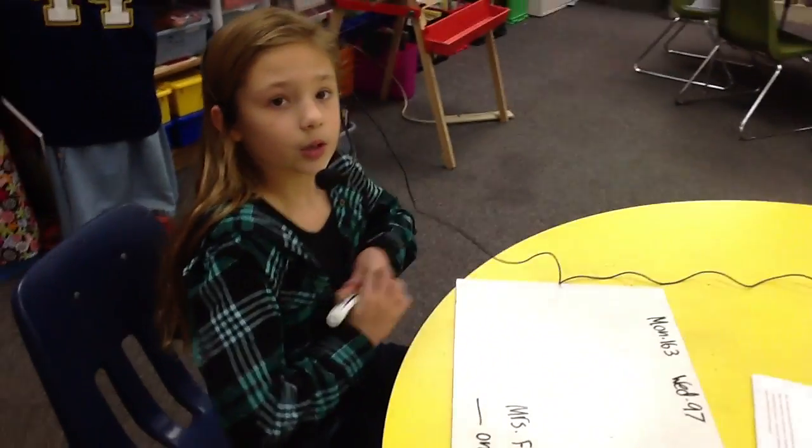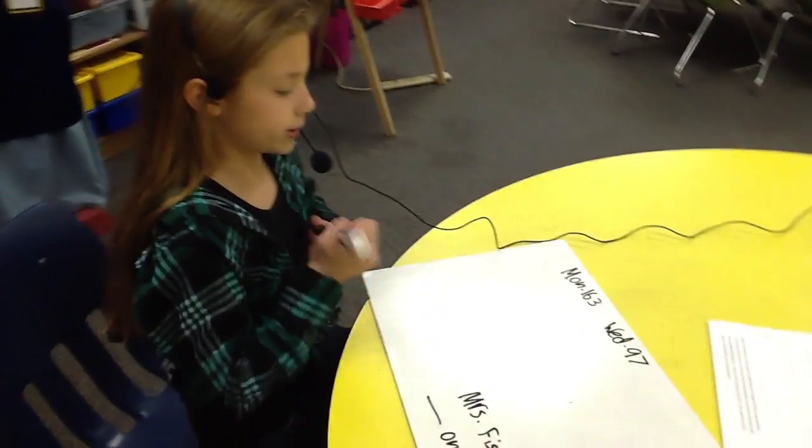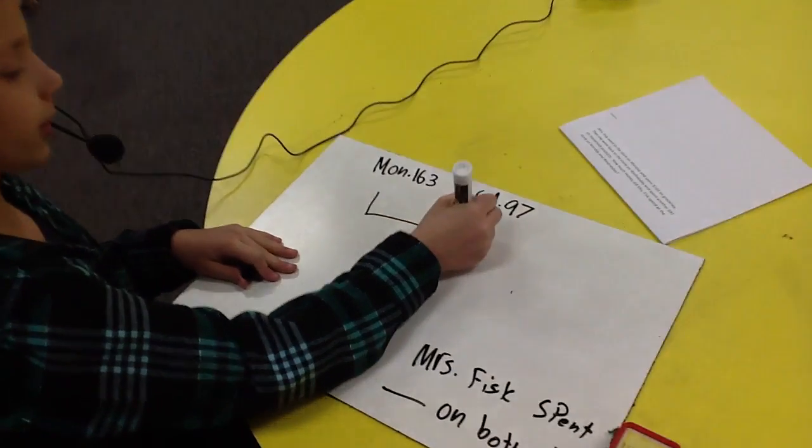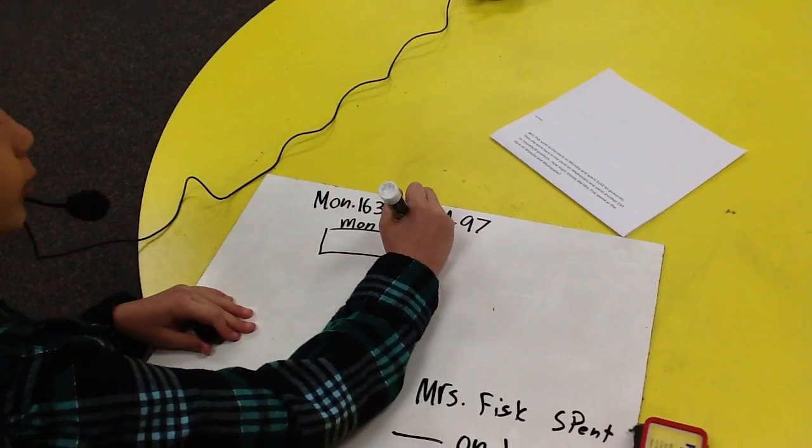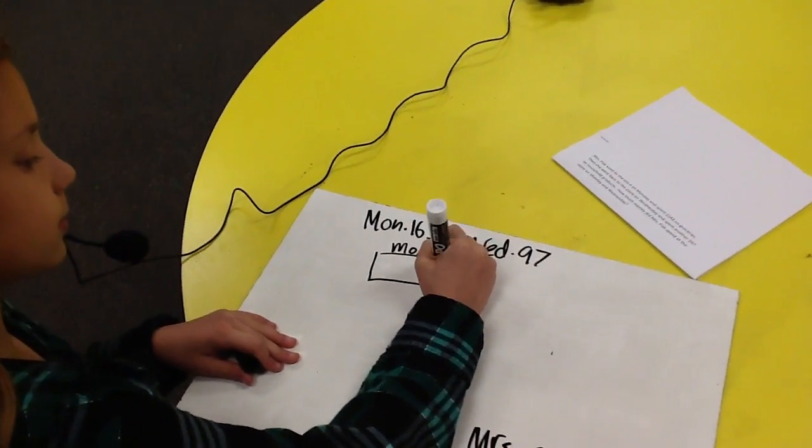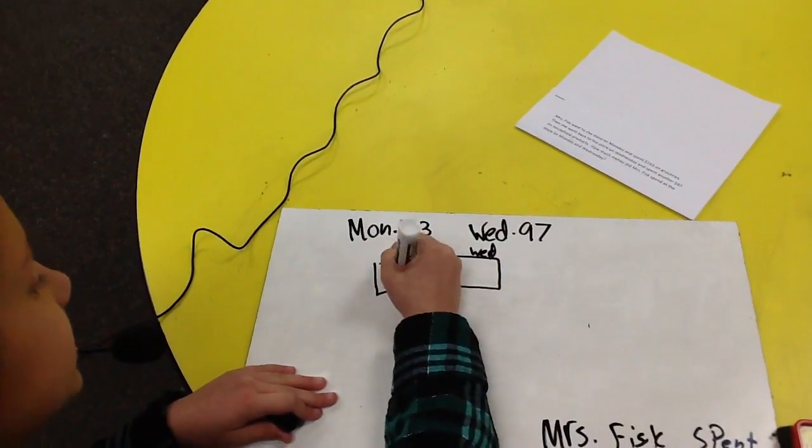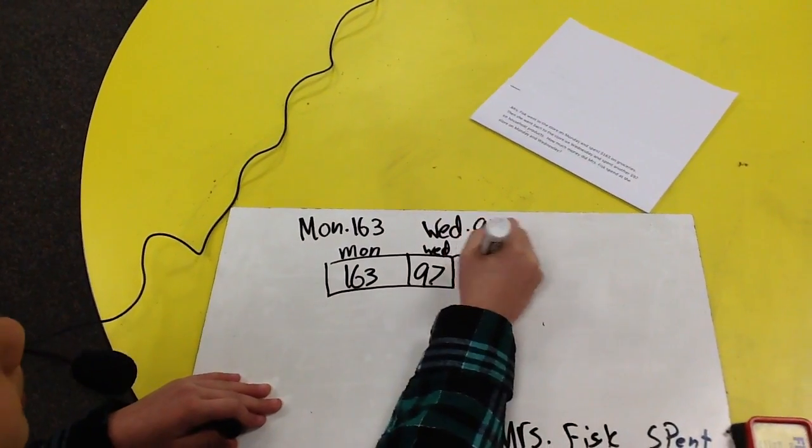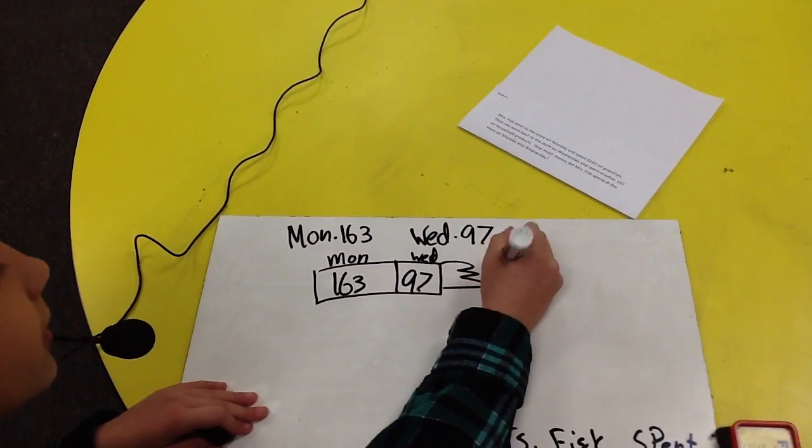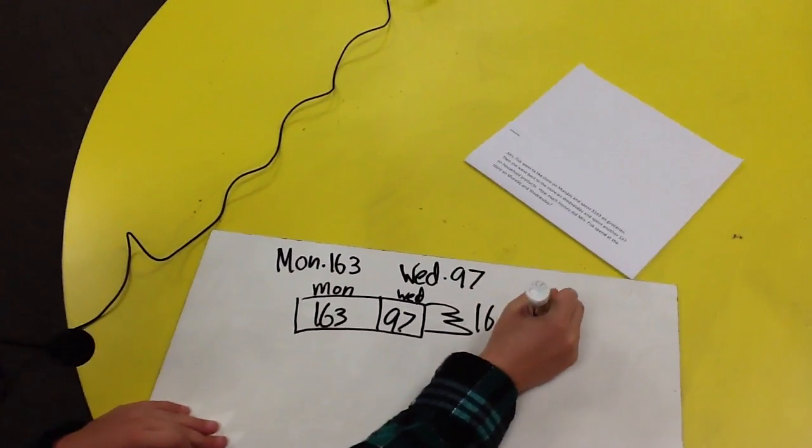So let's draw our strip diagram. So this is Monday and this is Wednesday. Well, she spent $163 on Monday and $97. That's basically just saying $163 plus $97.